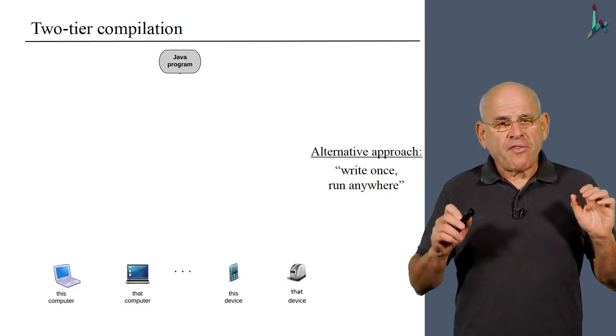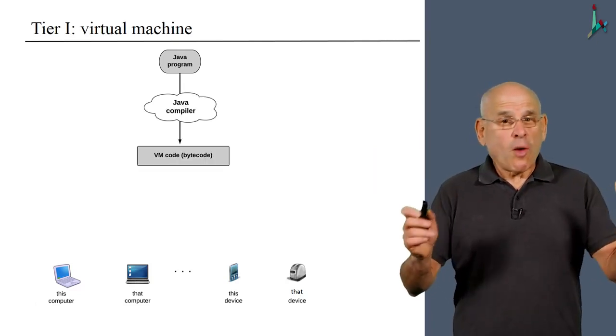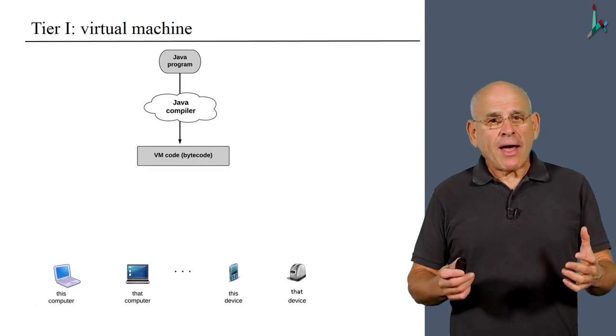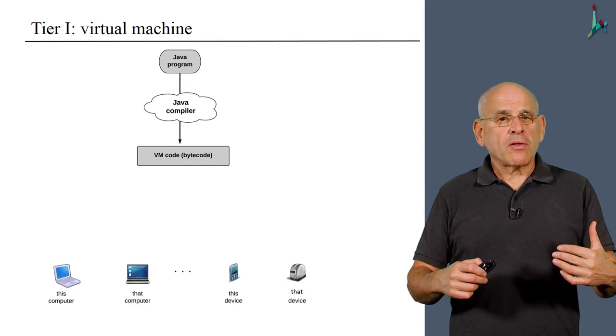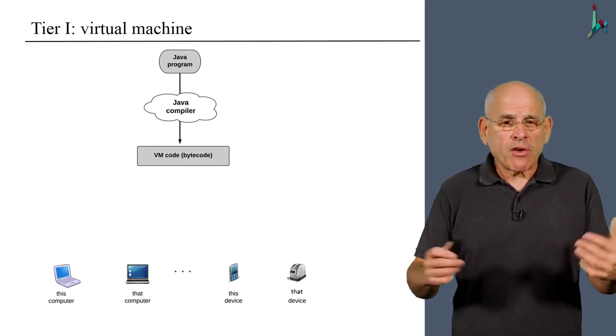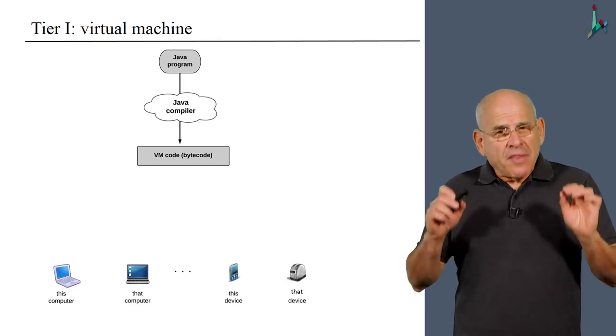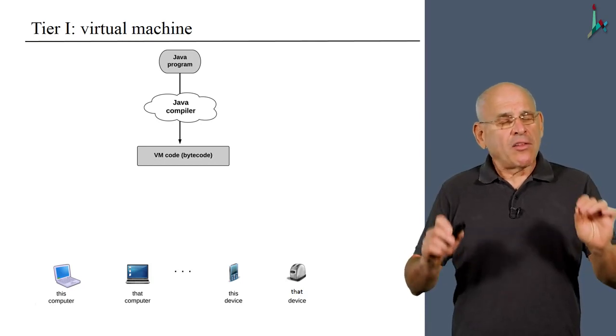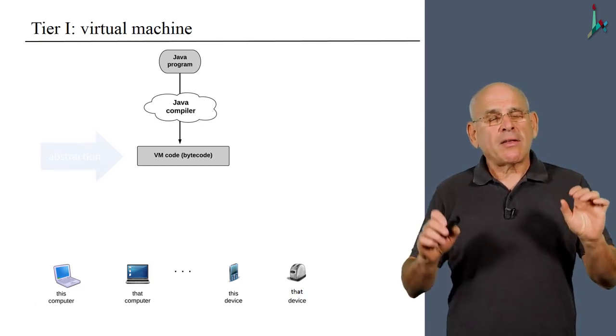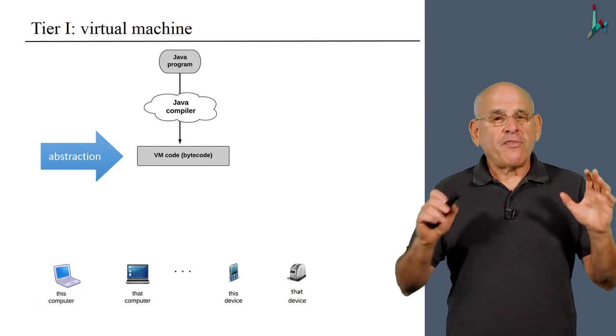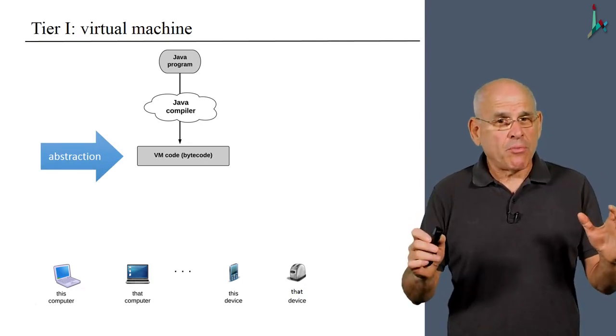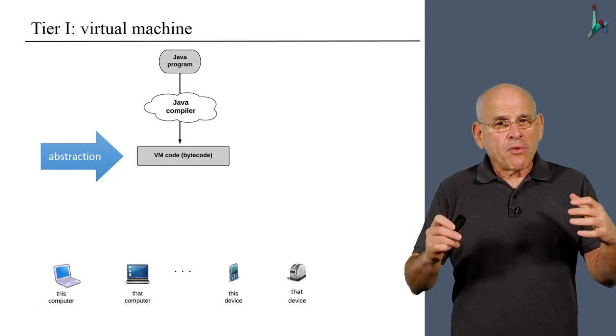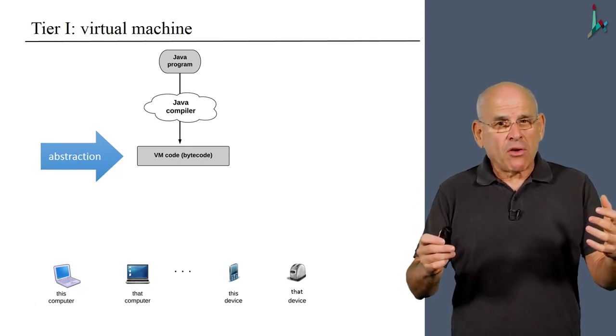In the first tier, the top tier, the Java compiler translates the Java program into something called, in the world of Java, bytecode. But in general, we call it VM code. Now this VM code is designed to run on an abstract artifact called a virtual machine. It's not a real computer, it's an imaginary computer.